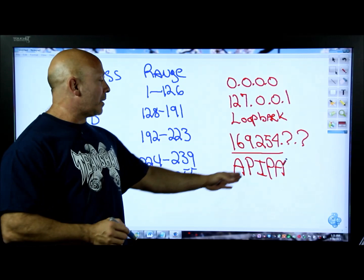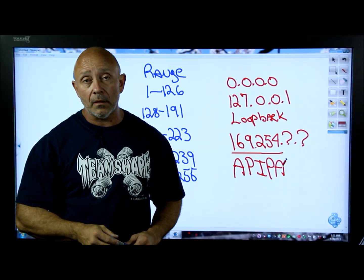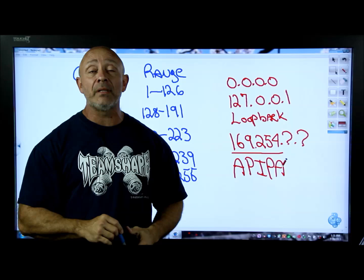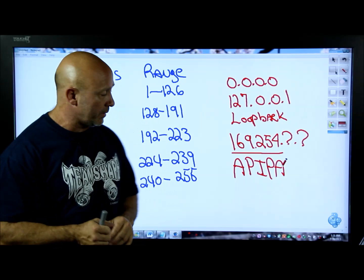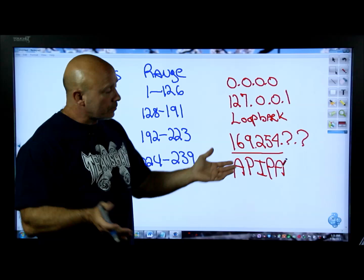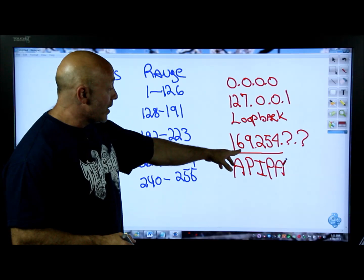APIPA stands for Automatic Private IP Address - it assigned itself that. You can manipulate this: if you have DHCP enabled there's an extra tab where you can put static IP addresses to fall back to if the DHCP server won't assign you one. These are among the most common reserved addresses. You can see that 169.254, which falls in the Class B range, is not used because it is reserved.